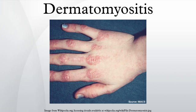Dermatomyositis is a connective tissue disease related to polymyositis that is characterized by inflammation of the muscles and the skin. While dermatomyositis most frequently affects the skin and muscles, it is a systemic disorder that may also affect the joints, the esophagus, the lungs, and, less commonly, the heart.